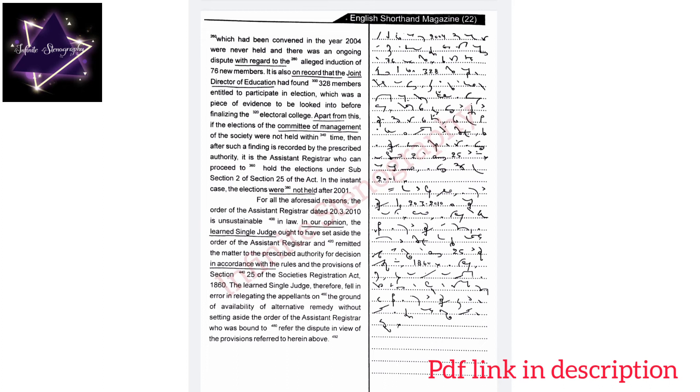the learned single judge ought to have set aside the order of the assistant registrar and remitted the matter to the prescribed authority for decision in accordance with the rules and the provisions of section 25 of the Society's Registration Act,